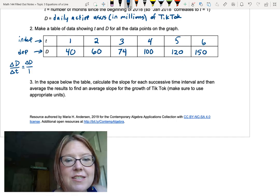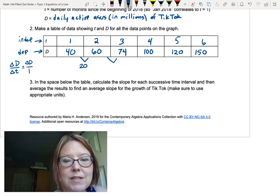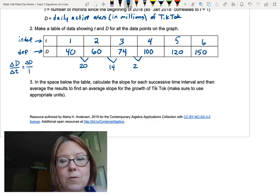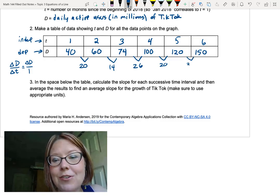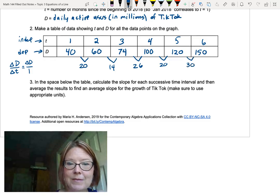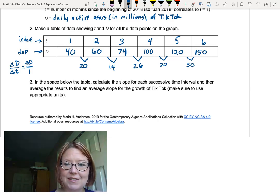So the change in 60 minus 40 would be 20. The change from 74 down to 60 would be 14. From 100 down to 74 would be 26. From 120 to 100 would be 20. And from 150 to 120 would be 30. So our slopes for the consecutive months in the table are 20, 14, 26, 20, and 30.